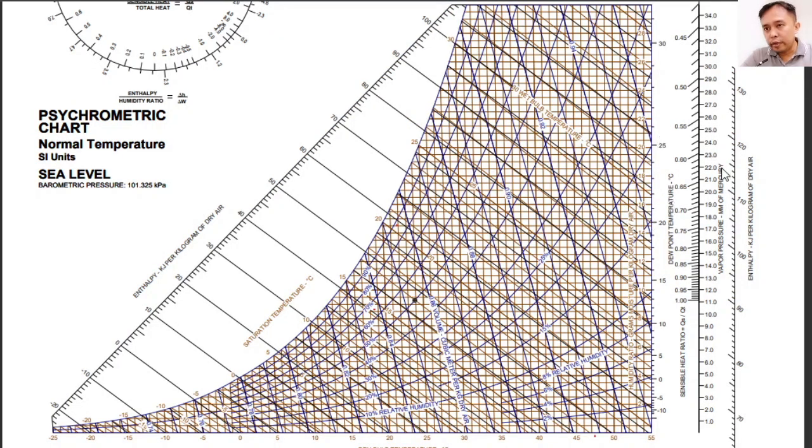Another one is your humidity ratio. So this is in grams of moisture per grams of dry air, or sometimes you can see this to have units in kilograms of H2O per kilogram of dry air. And as you move upward, the value of your humidity ratio increases. So like this one, 10, 12, 13, and so on.